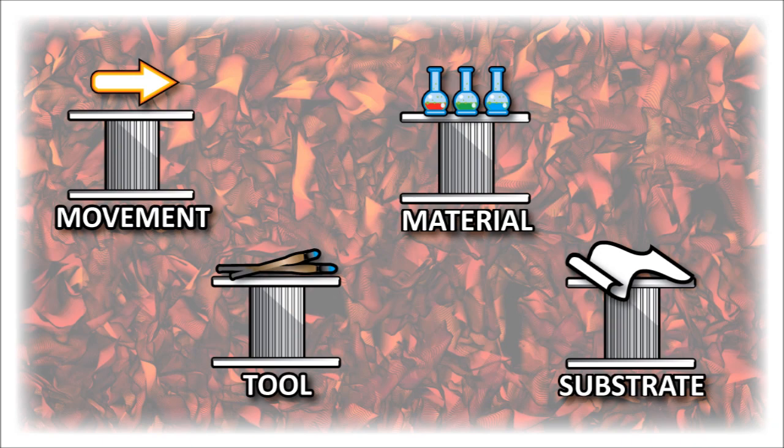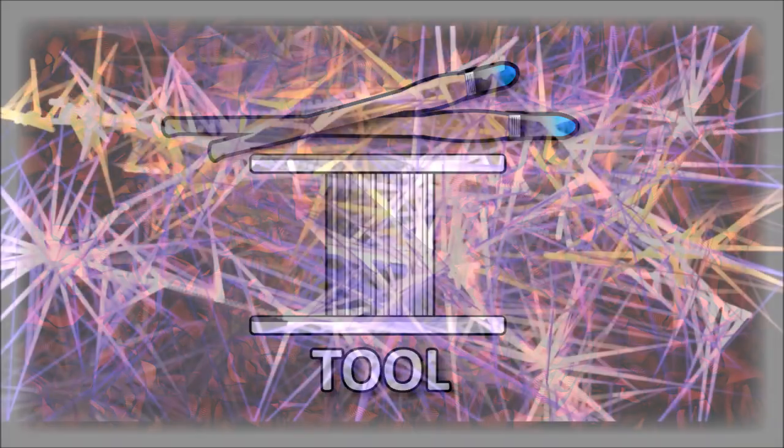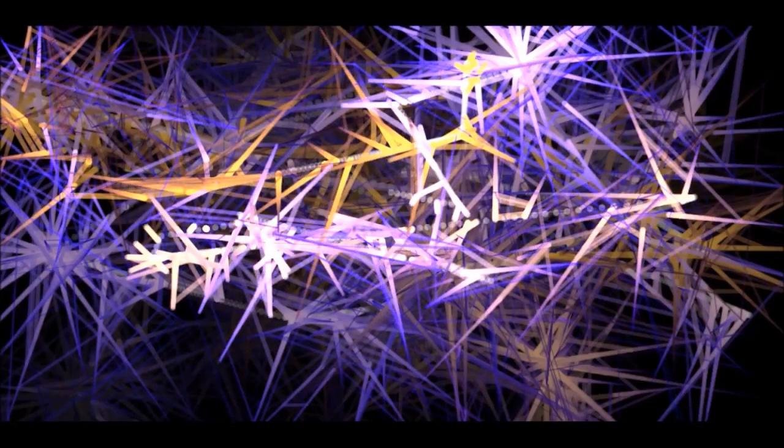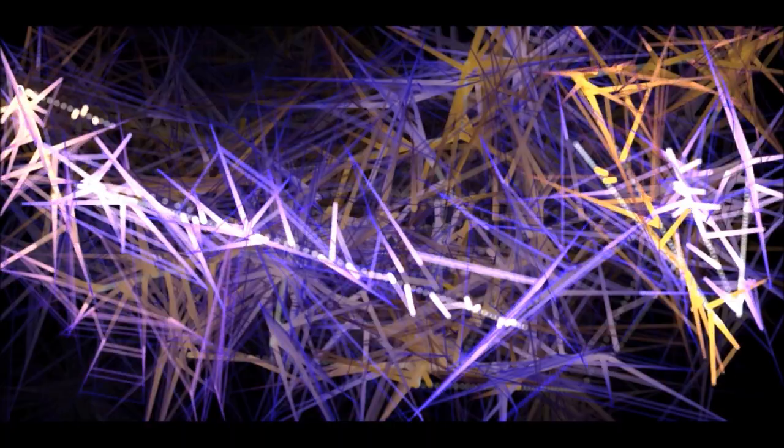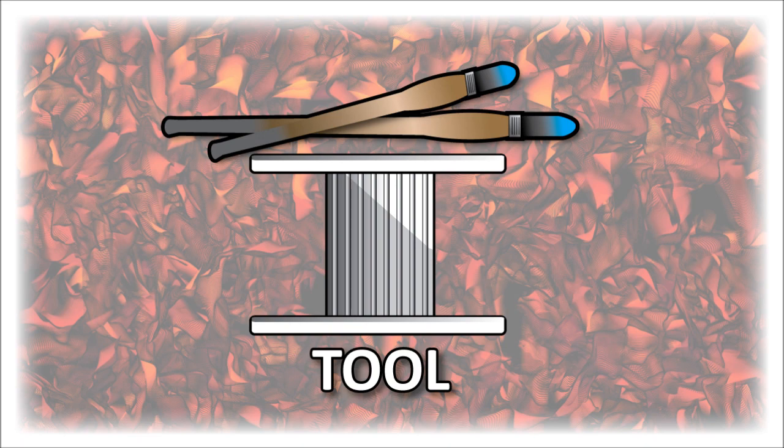There are other pillars too, like the tool pillar, the material pillar, and the substrate pillar. Each covers an aspect of the creative control an artist has over algorithmic procedures and their arrangement. Let's look at the tool pillar. Conceptually, it functions as the brush. It's what the movement is applied to. The brush can be a system of particles or a system of a system of particles, however convoluted you'd like it to be within functional reason. A brush can be a very abstract thing.